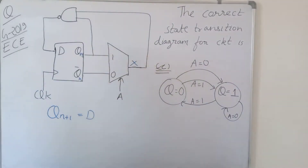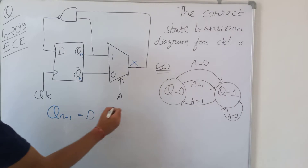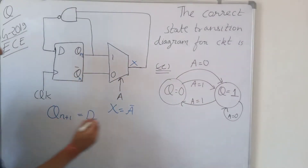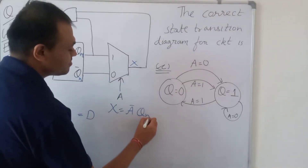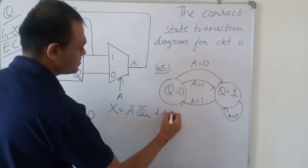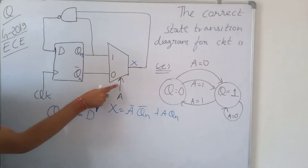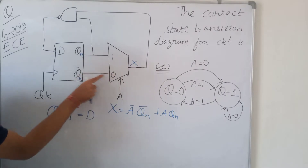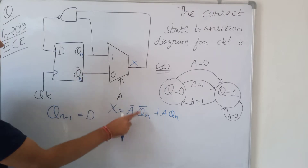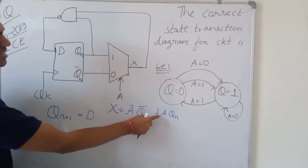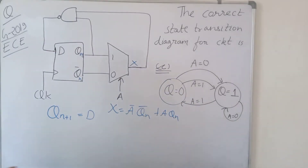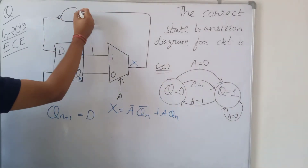This is the multiplexer. Let the output of the multiplexer be X. X = ā·Qn̄ + a·Qn, because when a is 0, Qn̄ is selected (input 0 is connected to Qn̄), and when a is 1, Qn is selected.